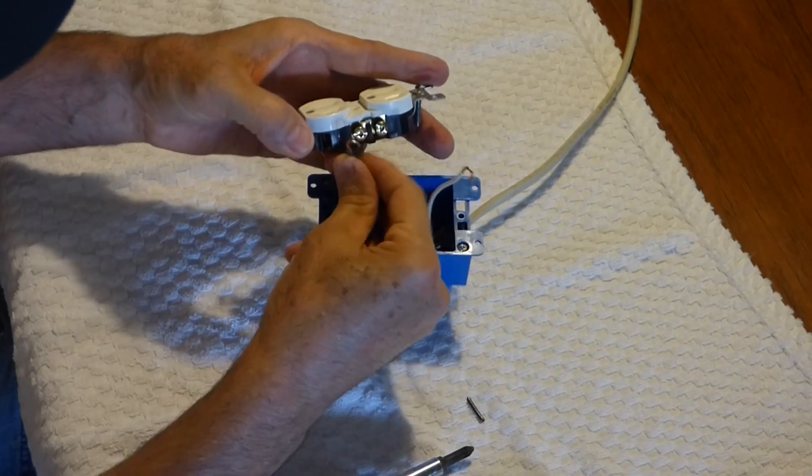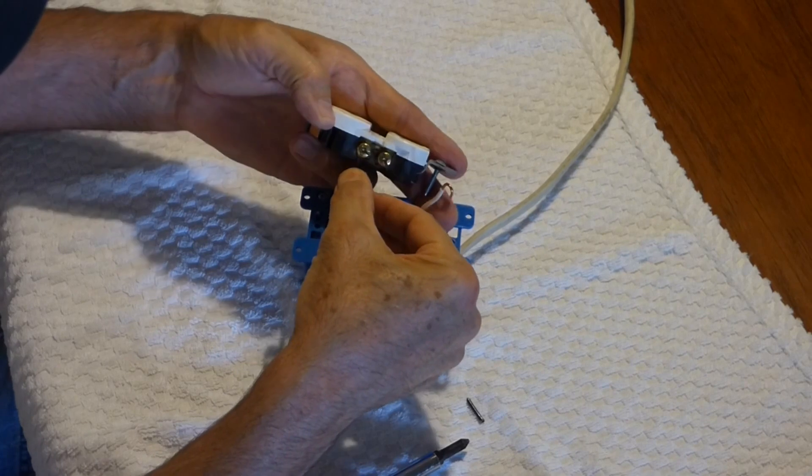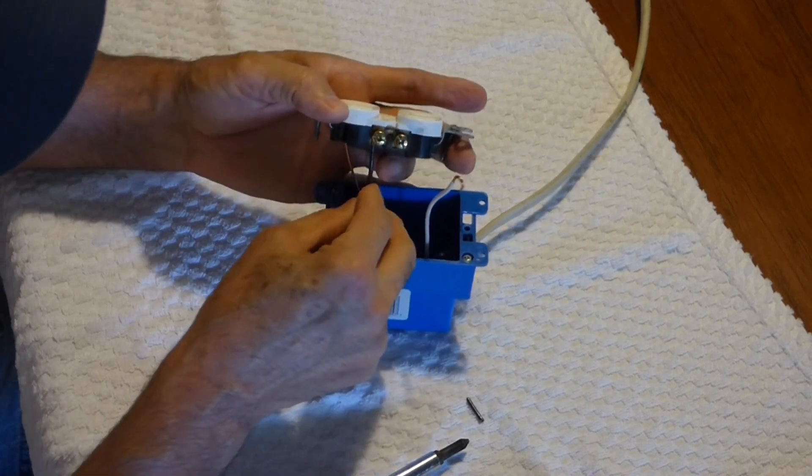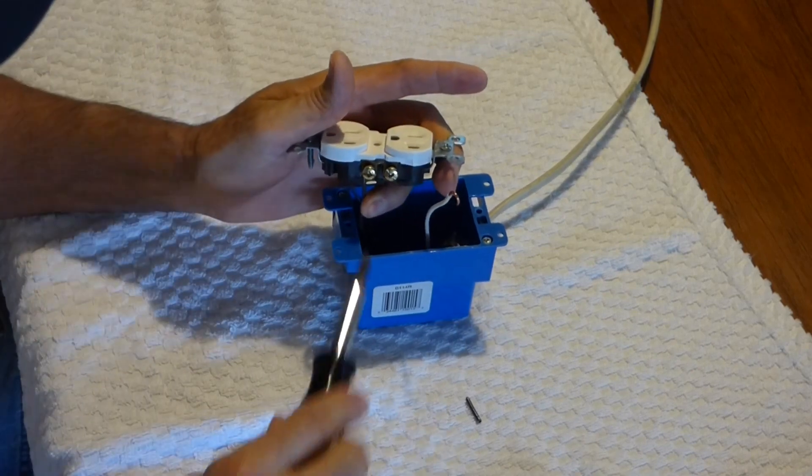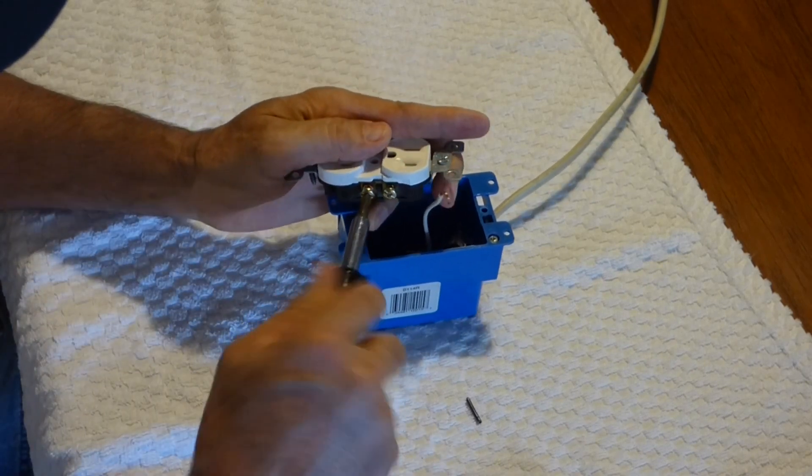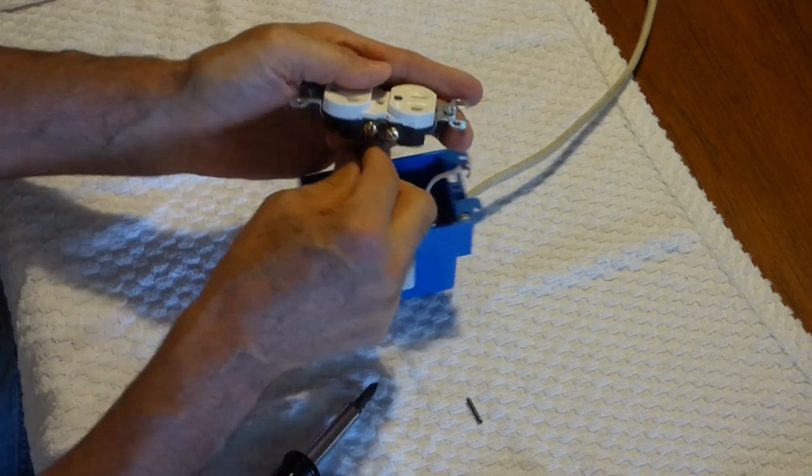Then I'll do the black wire, which is the hot wire. Put it on, and there's a little stop there. I just lean it against there, tighten the screw, and we're all set.